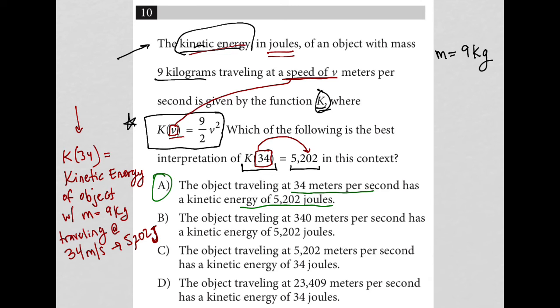Choice B, the object traveling at 340 meters. No, nope. That's already not true. So I cross it out.